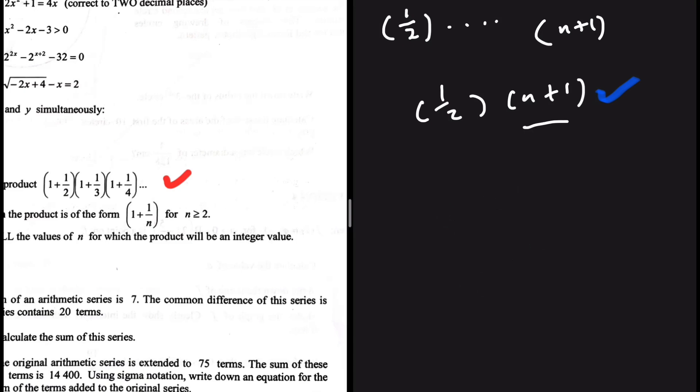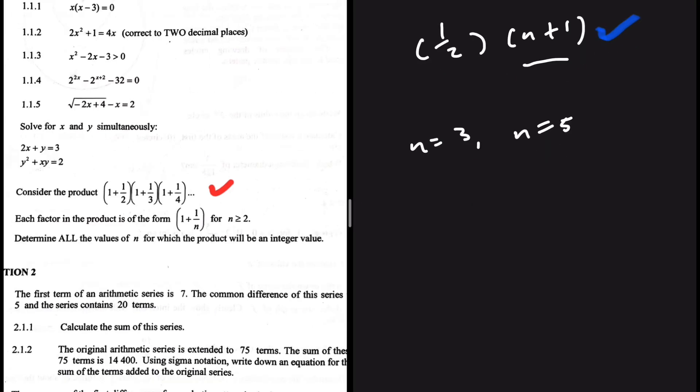If n is equal to 3, our condition is satisfied. Because we're going to have 4 divided by 2. If n is equal to 5, we're going to have 6 divided by 2. If n is equal to 7, we're going to have 8 divided by 2. So on and so on. So n can be 3, 5, 7, 9, up until infinity. Some infinity odd number so that our product can be an integer. So there we go.